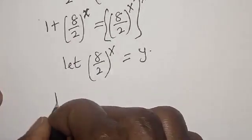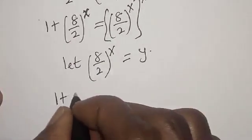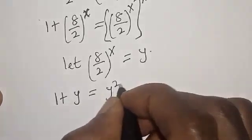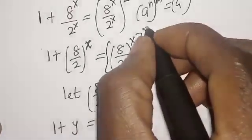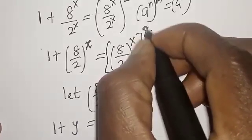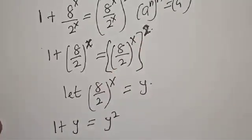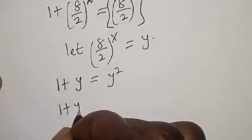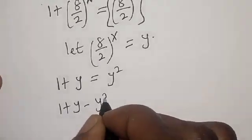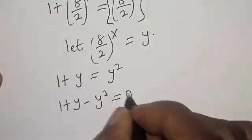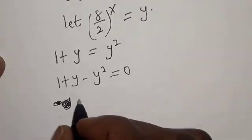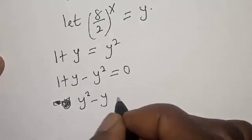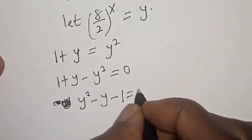Now we have 1 plus y is equal to y squared. Rearranging: 1 plus y minus y squared is equal to 0. Let's rearrange to y squared minus y minus 1 is equal to 0.